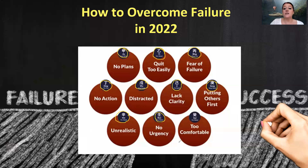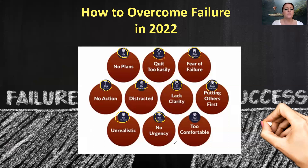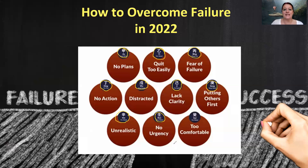If your month stem is Ren Water — the Yang polarity of water — then the reason you're failing in your career this year is simply because there's no urgency. You don't really think it's important to do what you're trying to do, or you're just complacent and don't feel pushed. Find someone who pushes you — someone who cheers you on to become better and gives you that sense of urgency that you seem to be lacking a little bit this year.